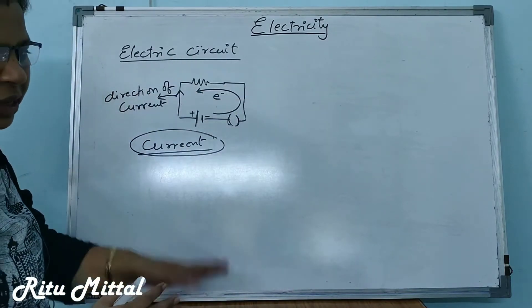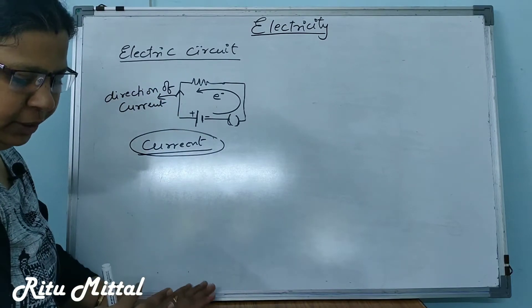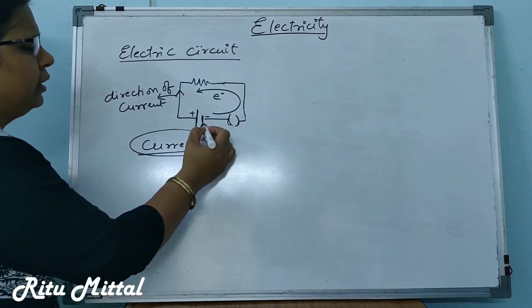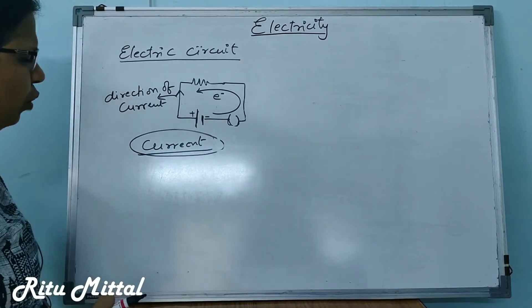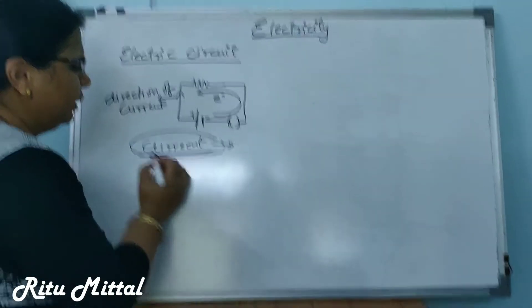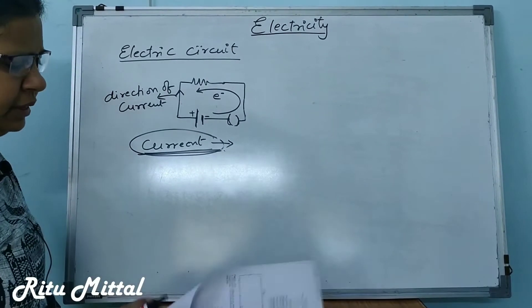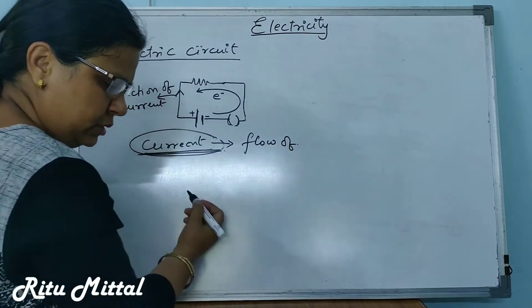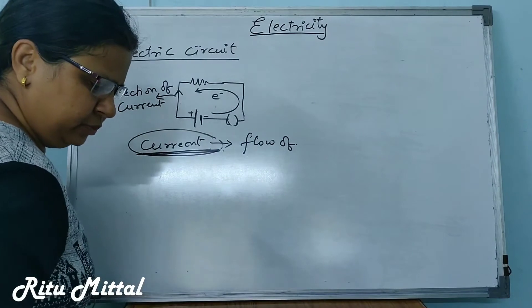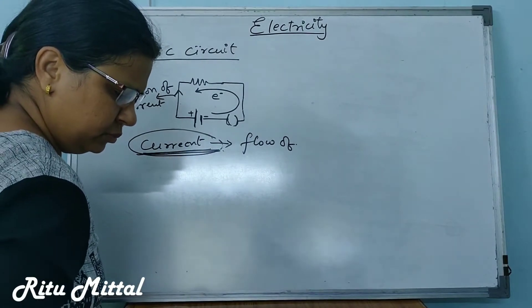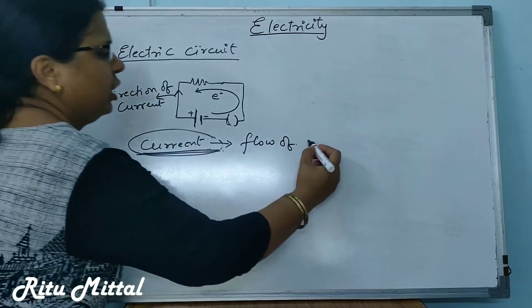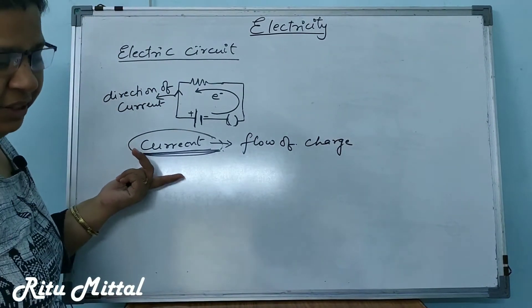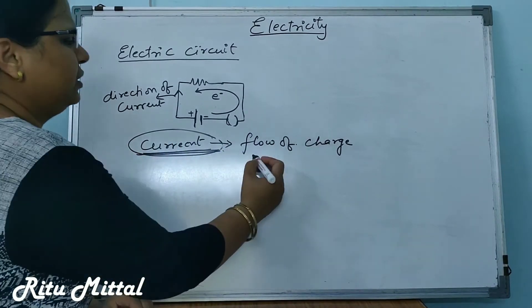This is an open circuit — in this, there is no flow of current. The more battery or higher voltage battery I connect, the more current I will have. Current is nothing but the flow of charge. It is because of the flow of charge carriers in a circuit.